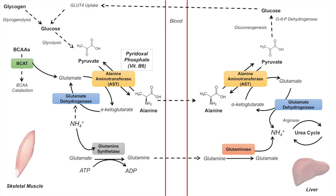The ammonium released by glutaminase is rerouted into the urea cycle, and the glutamate can further undergo a reaction with glutamate dehydrogenase, releasing another ammonium. So glutamine can actually transport two ammonium groups — two amino groups — to the liver. All of this leads to incorporation of nitrogenous waste into the urea cycle, and then the urea is excreted, allowing elimination of these nitrogenous wastes.